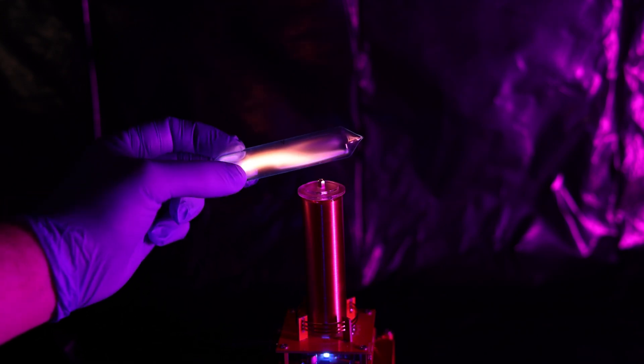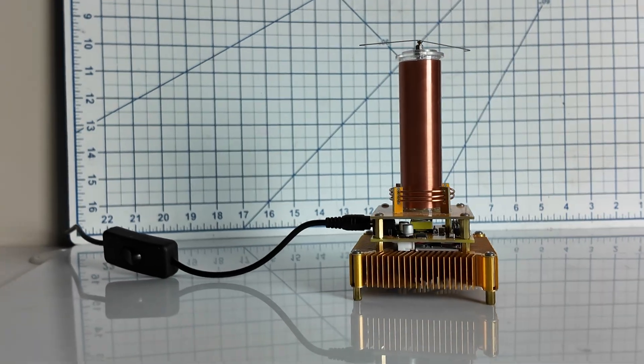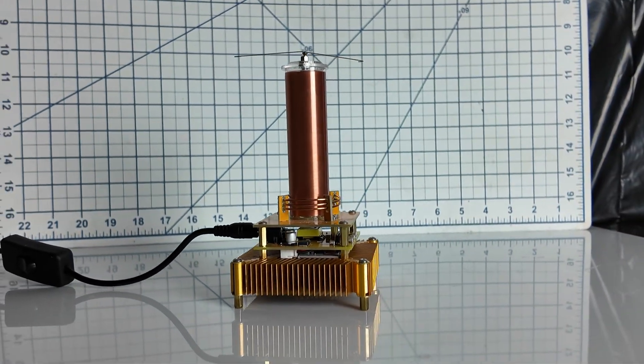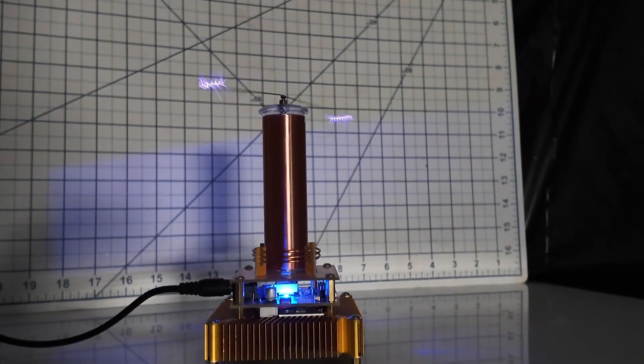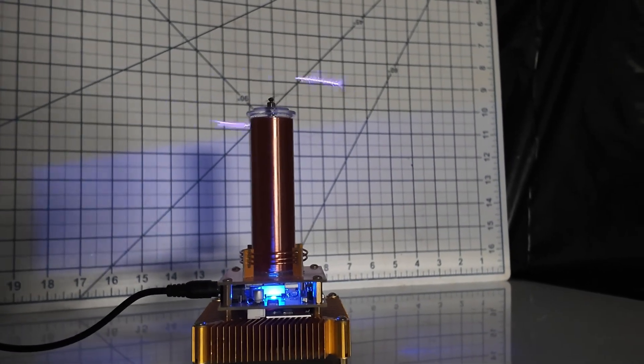The key component to get these to light up is this device here, known as the Tesla coil. This guy produces an electromagnetic field, one that will excite the electrons in the gases' orbitals through a process known as ionization.